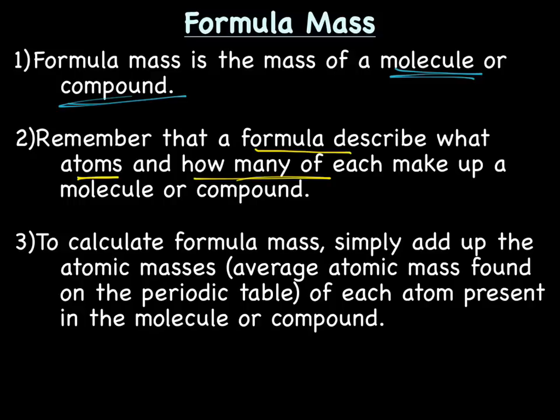So then, how do you calculate formula mass? Really, really easy. You simply add up the atomic masses, which is the average atomic mass found on the periodic table, of each and every atom present in the molecule or compound. That's really all there is to it.